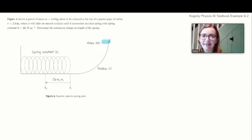All right then, so let's get started. This is the first question we're going to look at. We're told that figure four shows a parcel of mass five kilograms about to be released at the top of a quarter pipe of radius r is two meters, where it will slide on a smooth surface until it encounters an ideal spring with spring constant k is 40 newtons per meter. Determine the maximum change in length of the spring.